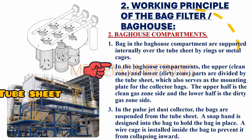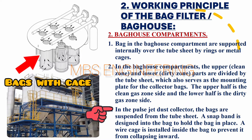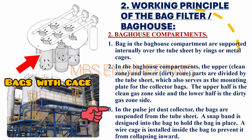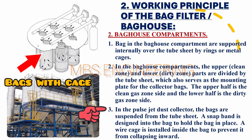In the pulse jet dust collector, the bags are suspended from the tube sheet. A snap band is designed into the bag to hold the bag in place. A wire cage is installed inside the bag to prevent it from collapsing inward.